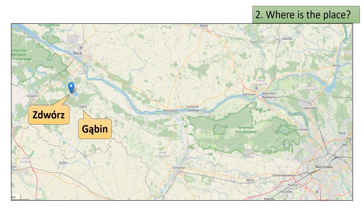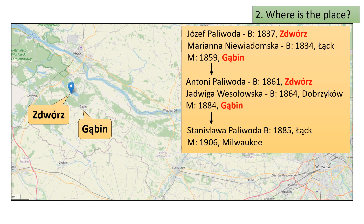Record this information for future reference. Zdwóz is west and south of Polivoda territory. Zooming in further, note that Zdwóz is just up the road from Gąbin, which seems right based on Geneteka searches for the Polivoda family.